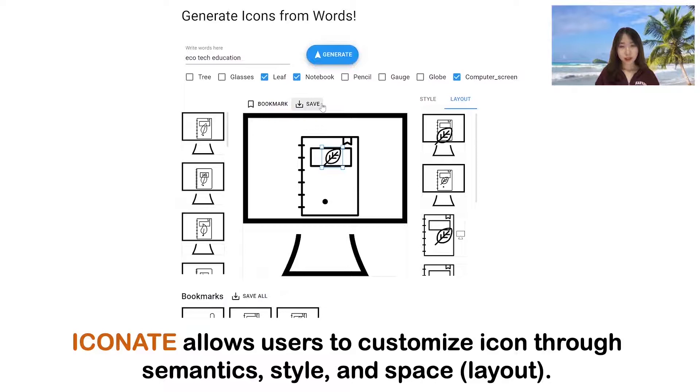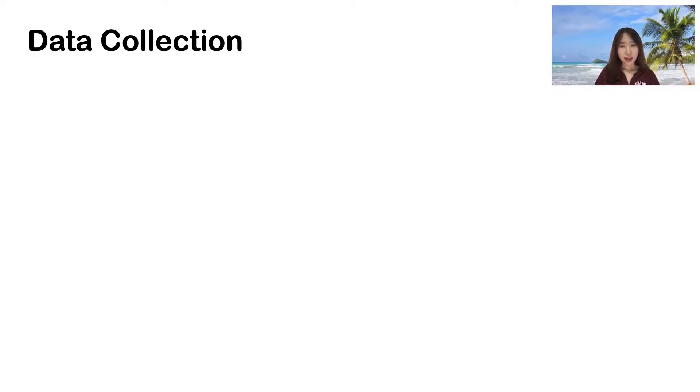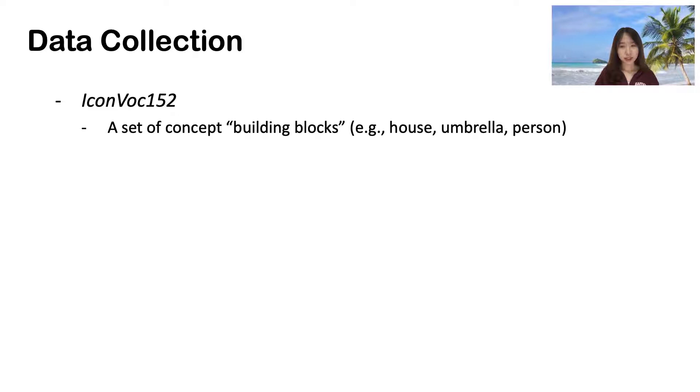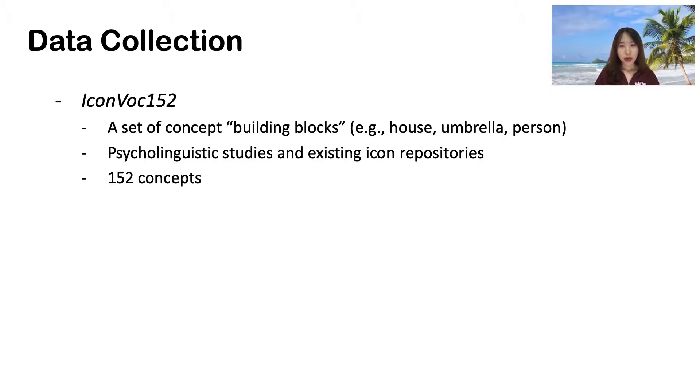To enable our computational pipeline, we introduce the following datasets. Our first step was to find a manageable but comprehensive set of concept building blocks such as a house, umbrella, and person that can be recombined to form a large diversity of compound icons. To do this, we turned to multiple sources including psycholinguistics studies and existing icon repositories for help. Finally, we got 152 concepts.